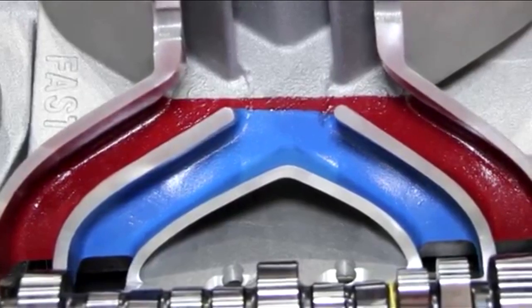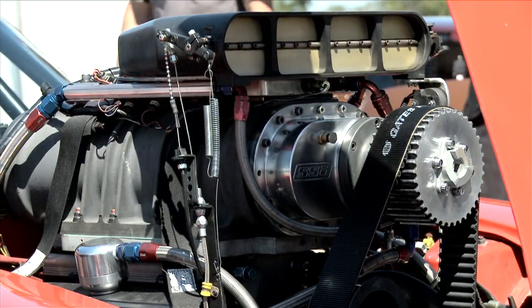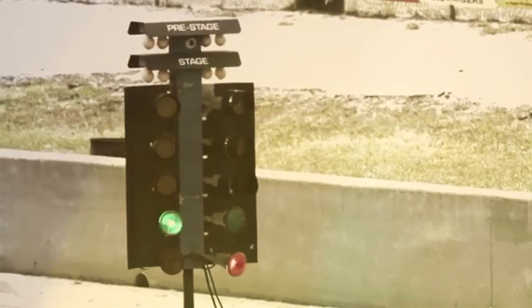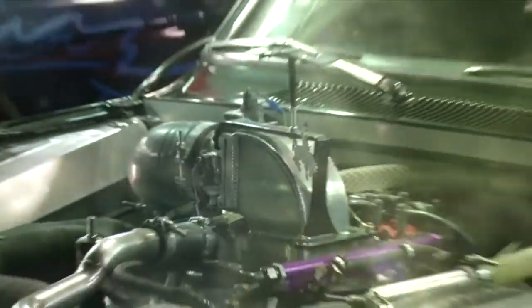To compensate for this air fuel ratio imbalance, past solutions have focused on creating equal length runner intake manifolds. While equalizing runner lengths is feasible in some hardcore racing applications, it is impractical for the everyday performance enthusiast to fit under the hood of their street machine.